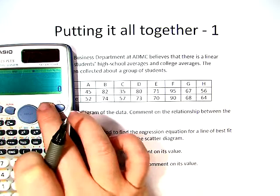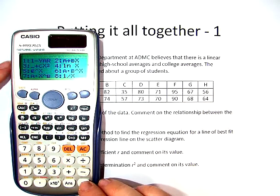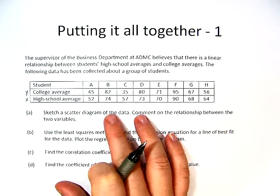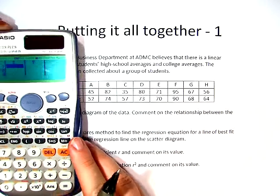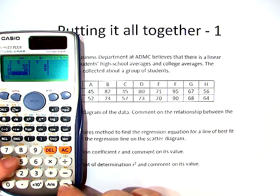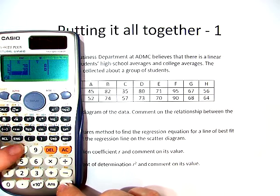We start by going to mode, then we go to stat, and then we hit a plus bx. Our x's are down below, so we'll start with that: 52, 74, 57, 73, 70, and 90, 68, and lastly 64.